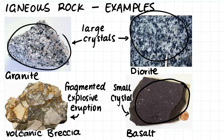Over here we have a volcanic breccia, which looks very different to the granite, diorite and basalt, because it actually formed due to an explosive eruption, which is what caused us to have all these fragmented bits of rock within the volcanic breccia.